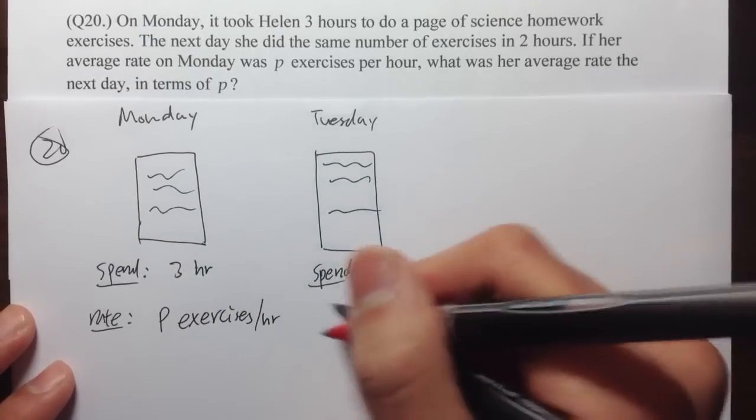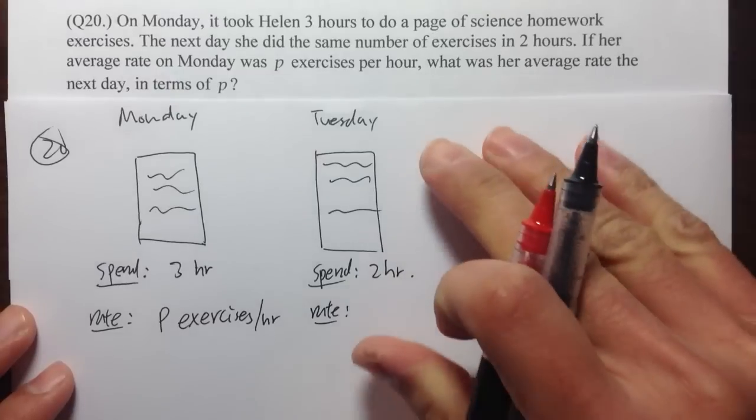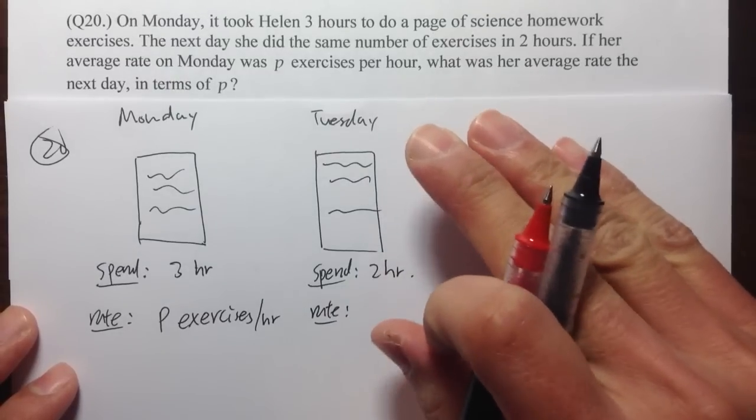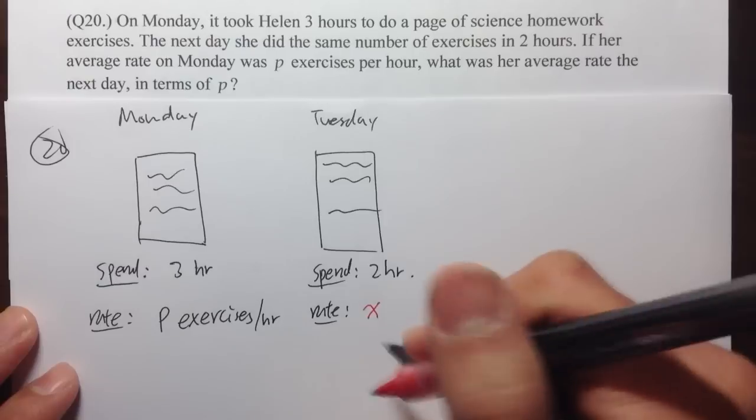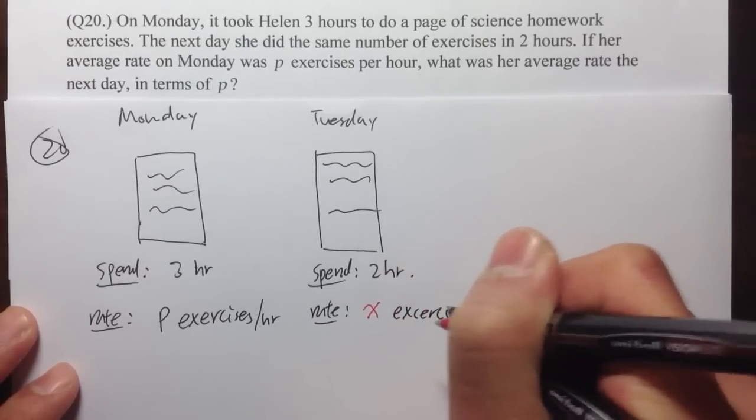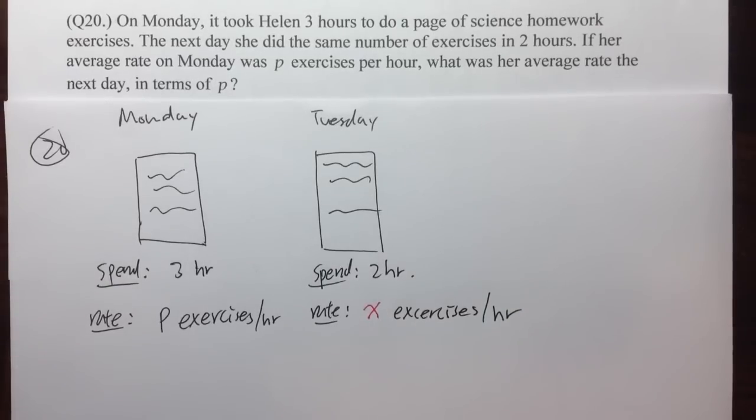And the question is, now we would like to know what's the rate that she was doing the exercises on Tuesday? And I don't know that, so let me call that X. So X exercises per hour. Based on this, what can we do with it?